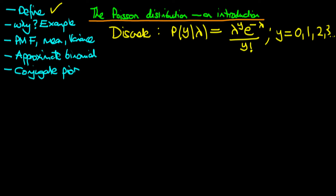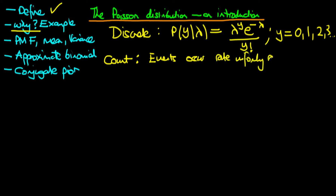Because y measures a non-negative integer, we can think about the circumstances when it might be appropriate to use a Poisson distribution to model a situation. Generally, we use the Poisson distribution to measure the count of events which occur at a rate that is uniformly random in either time or space. Additionally, the events must be independent.